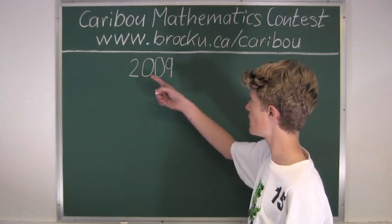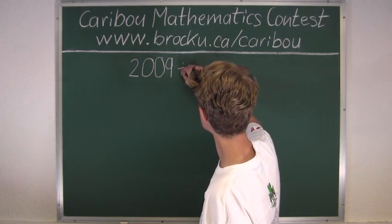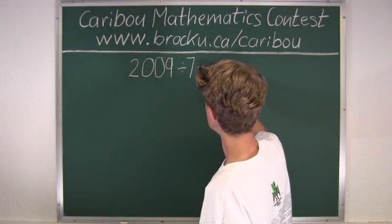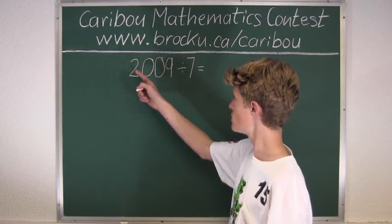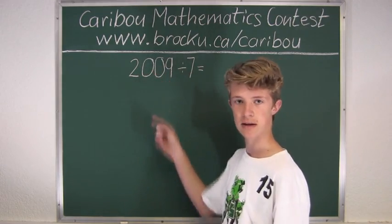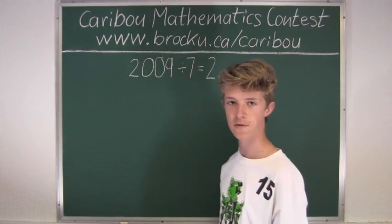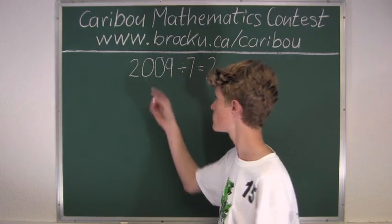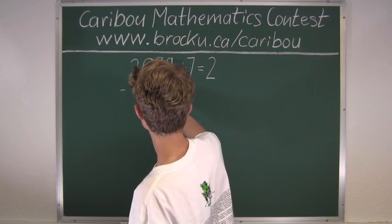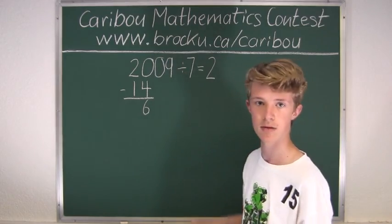So now let's divide 2009 by 7. We know 7 doesn't go into 2, so now we will try 20. 7 goes into 20 two times. So 7 times 2 is 14 and we will subtract that from 20. And that is 6 and then we will bring down the 0.